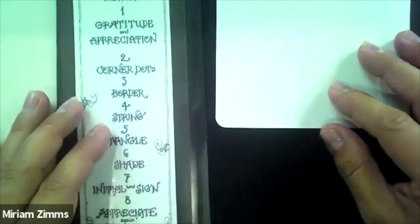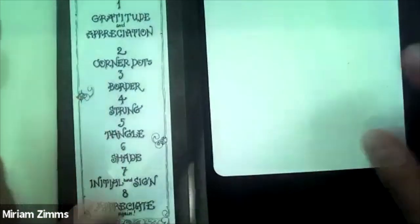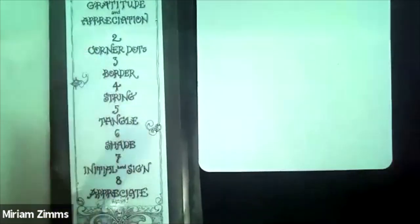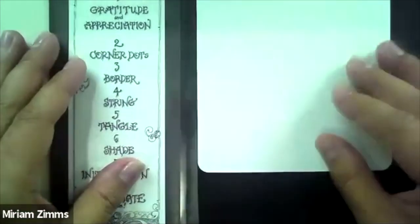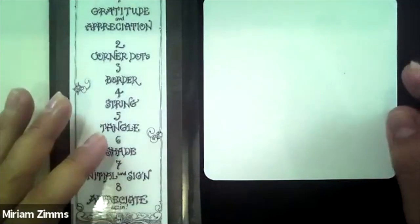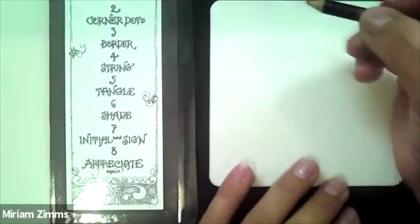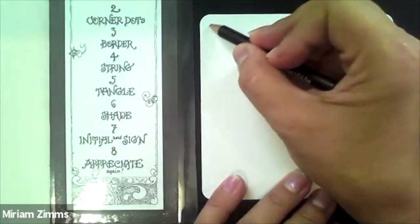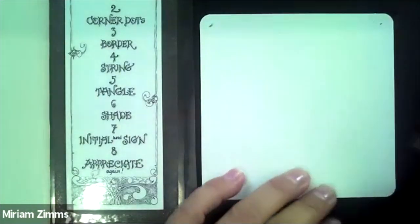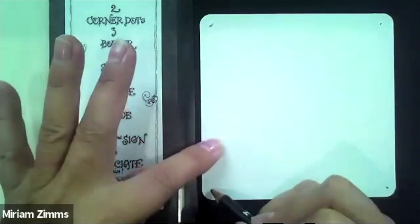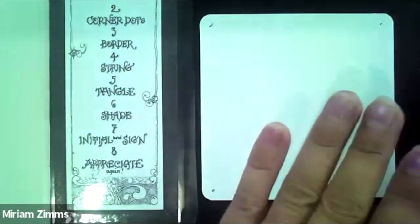First thing I want to do is just take a deep breath, get centered, and say I'm grateful for the opportunity to teach you about the Zentangle art method. Second, we take our pencil and we put a dot in each of the four corners or each of the 90 degree angles of the tile.